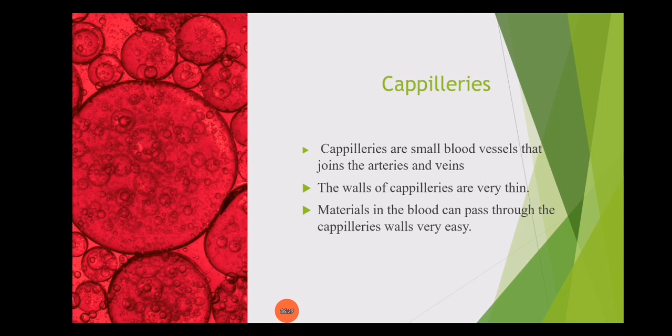Oxygen aati hai, carbon dioxide hai — to capillaries ki walls thin hoti hain, in se material jo hai easily baar aur andar aa sakti hai. Yeh chhoti blood vessels hoti hain aur yeh arteries ko aur veins ko aapas mein join karti hain. These all are the capillaries.